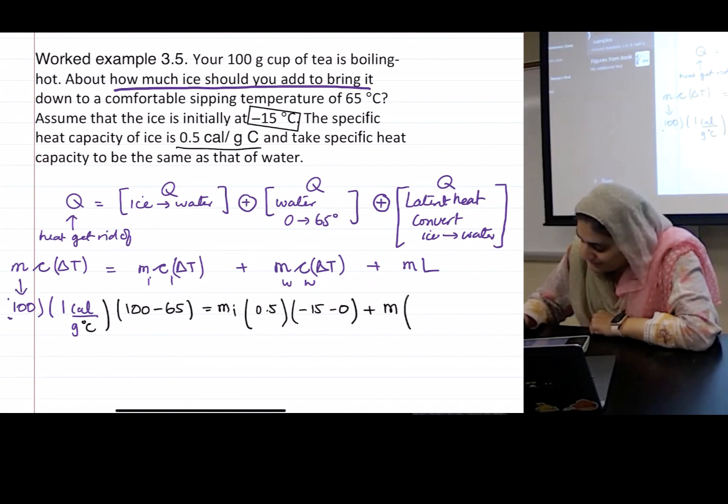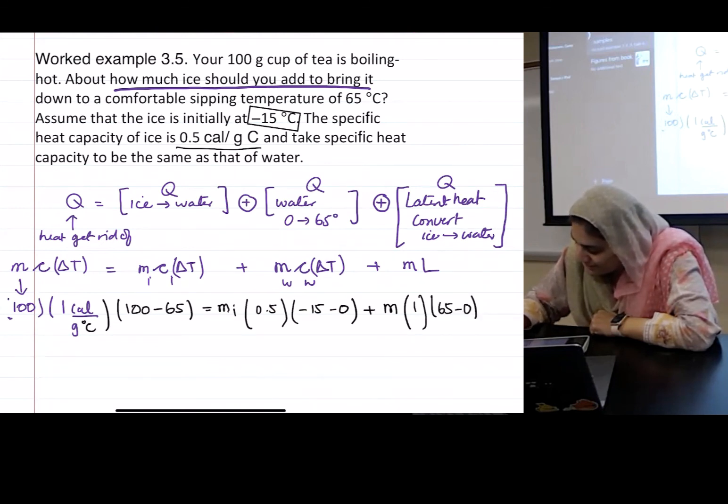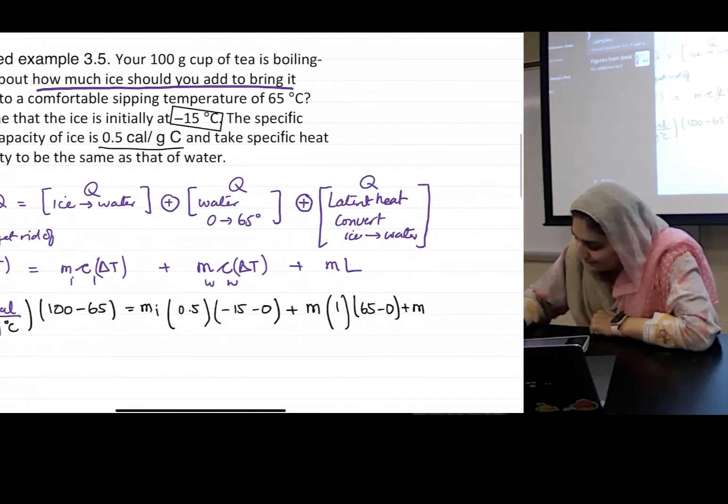Plus mass of the water is what I want. c_w of water is one calorie per... blah blah blah, I'm not writing it again, I'm running out of room. And what's the delta T for water? From 65 minus zero. Plus m and the latent heat for water is 80.